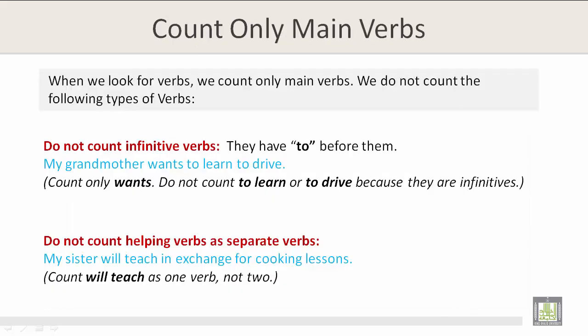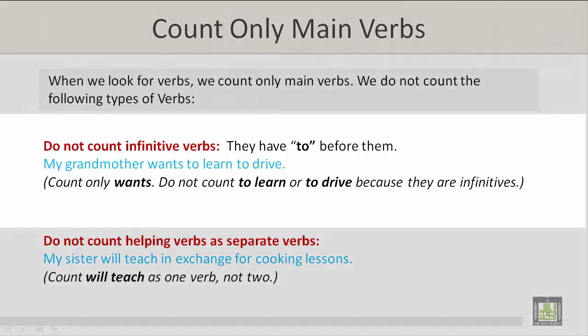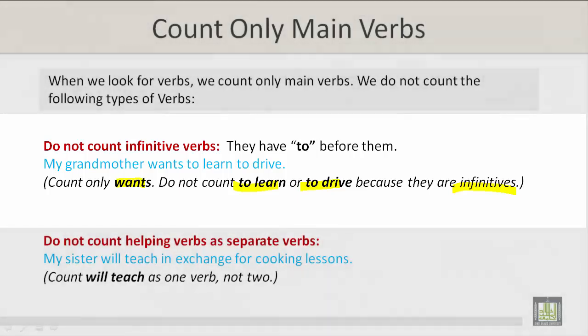When we look for verbs, we count only main verbs. We do not count the following types of verbs. Do not count infinitive verbs — they have 'to' before them. For example: 'My grandmother wants to learn to drive.' Count 'wants' only once. Do not count 'to learn' or 'to drive' because they are infinitives.